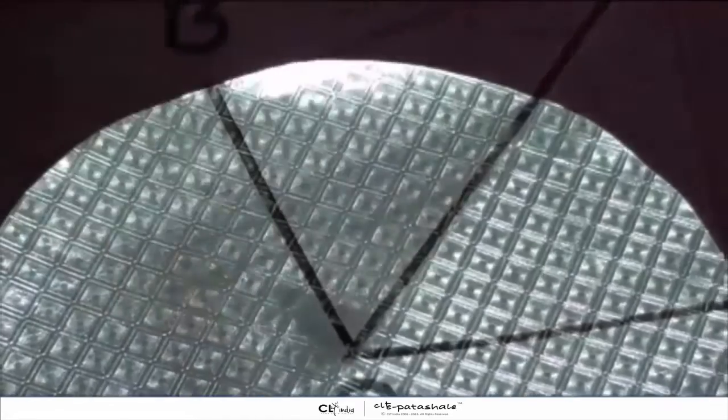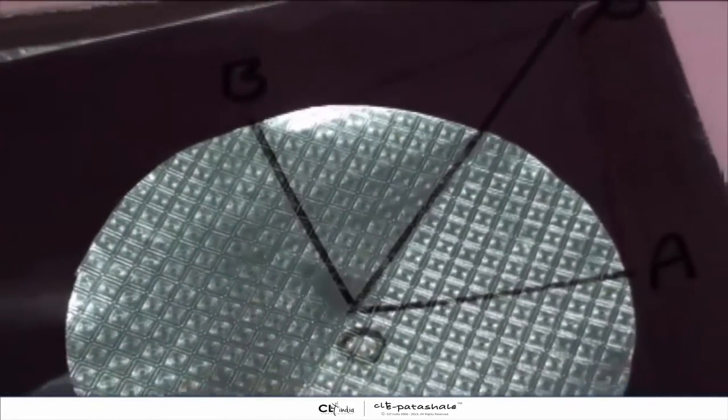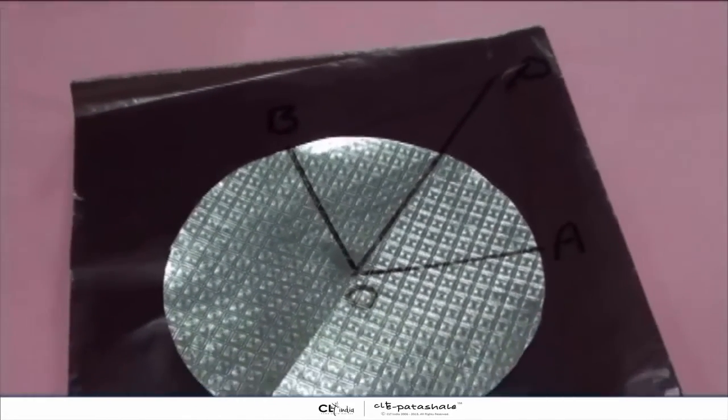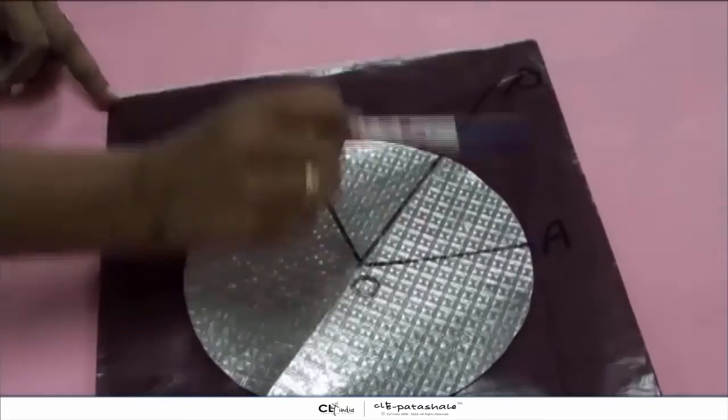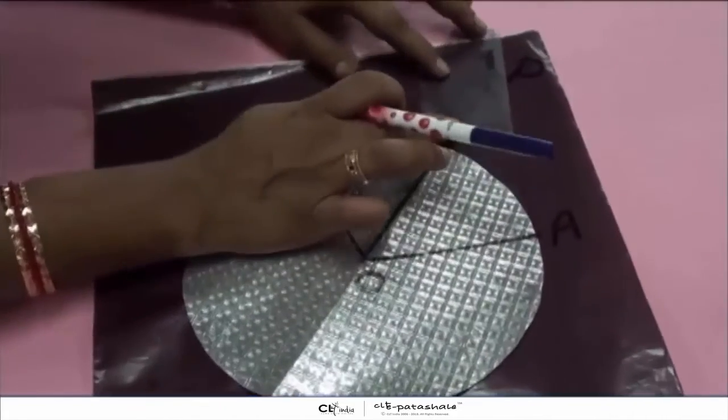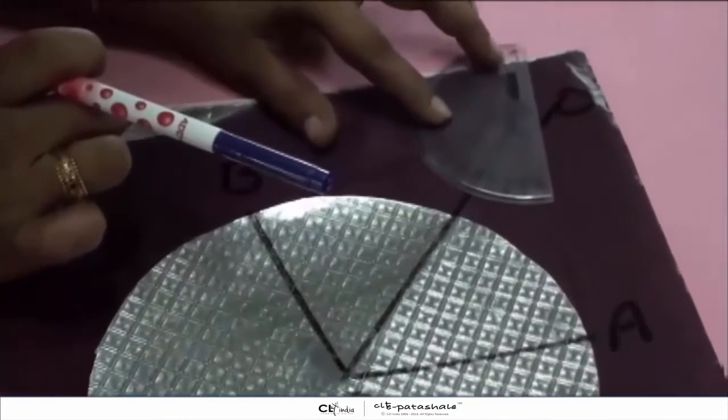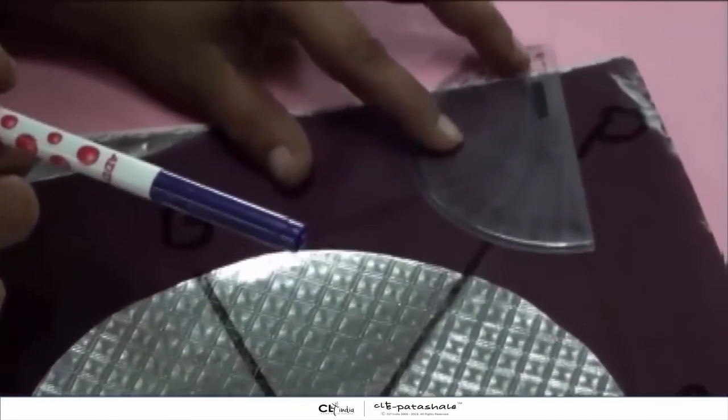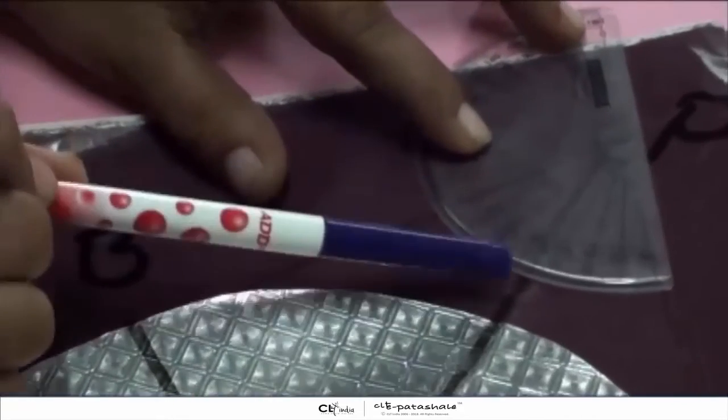Now take your protractor out and we will measure angle APO. APO is equal to 35 degrees.